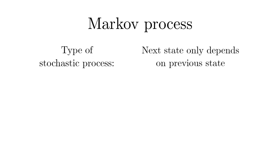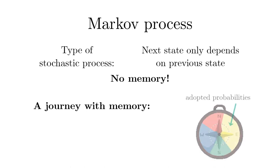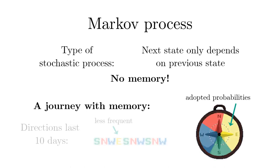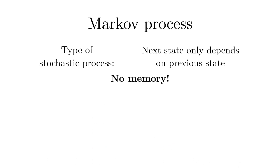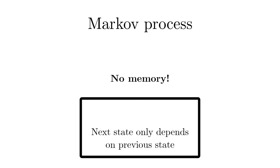There are many different important types of stochastic processes. Those discussed so far have one thing in common. The state or position of the next time step depends only on the previous position. So there is no memory. A journey with memory could be that Captain Bayes chooses the next direction with a probability that favors directions which occurred less frequently in the last 10 days. A stochastic process whose next state only depends on the present state is called Markov process.